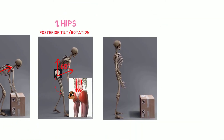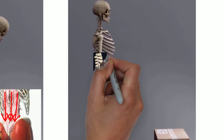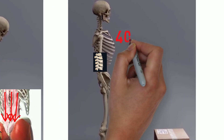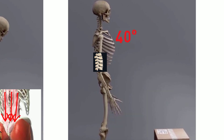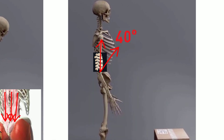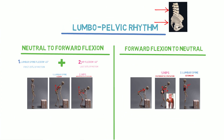As the pelvis approaches the neutral position, the spine will begin to extend about 40 degrees back to neutral and the normal lordotic curve will return. Okay, that is it for the lumbar pelvic rhythm.